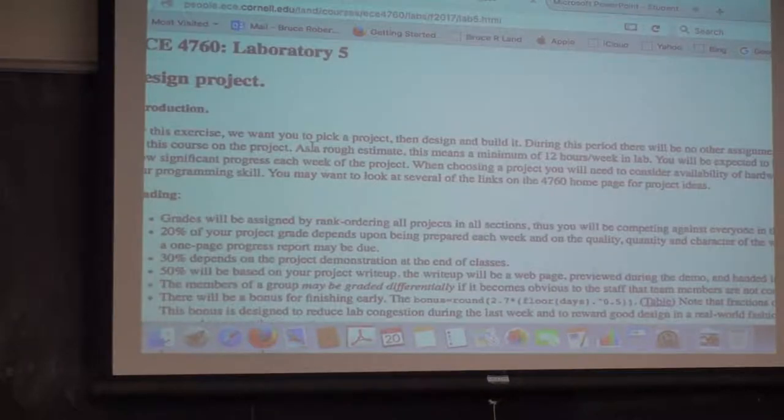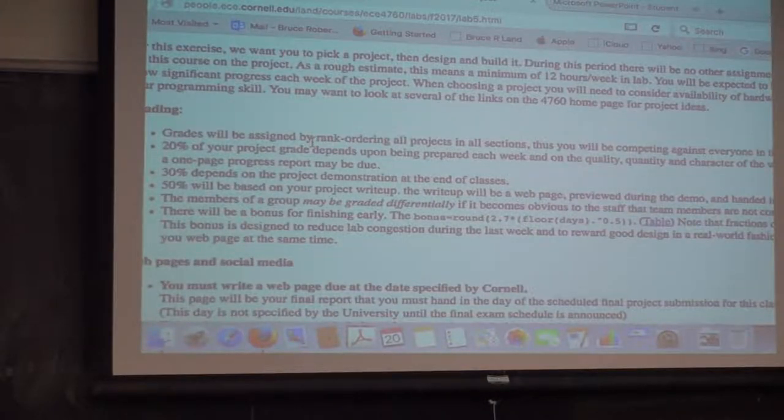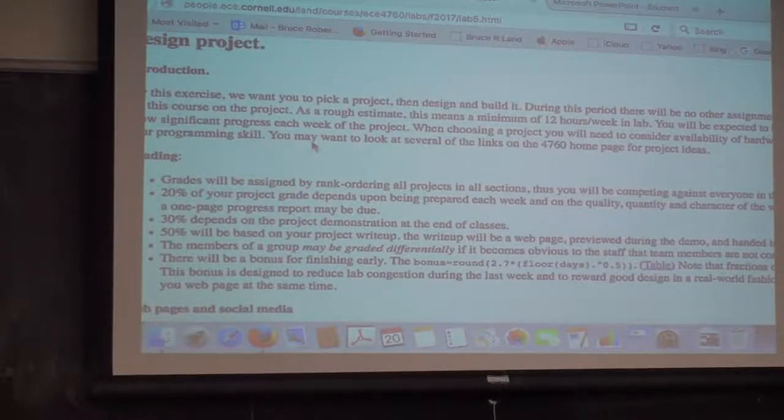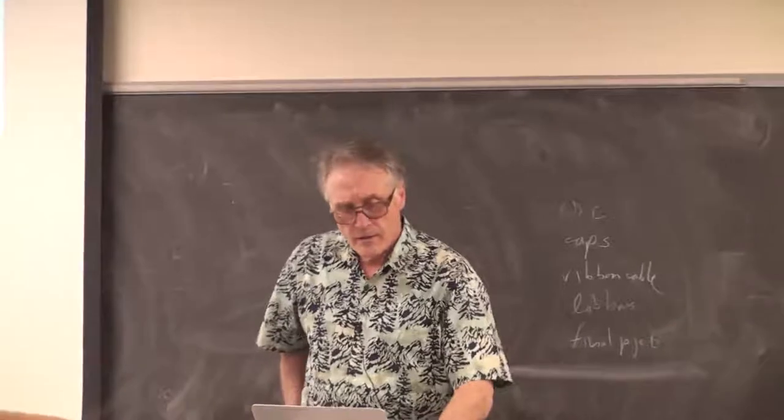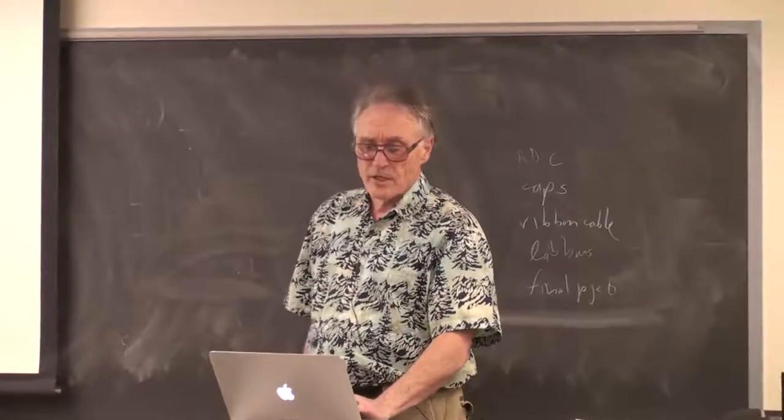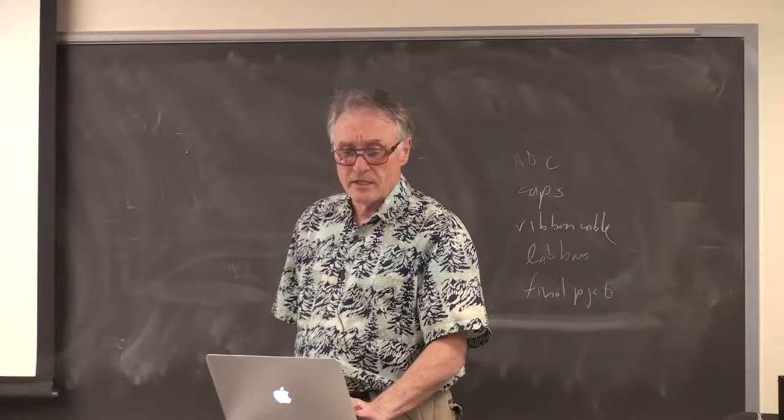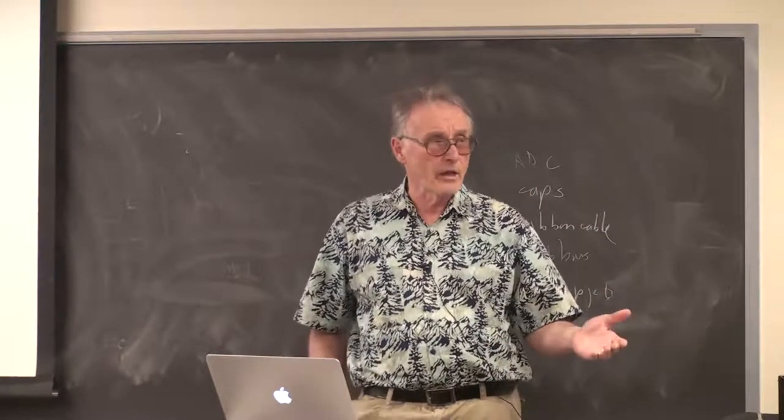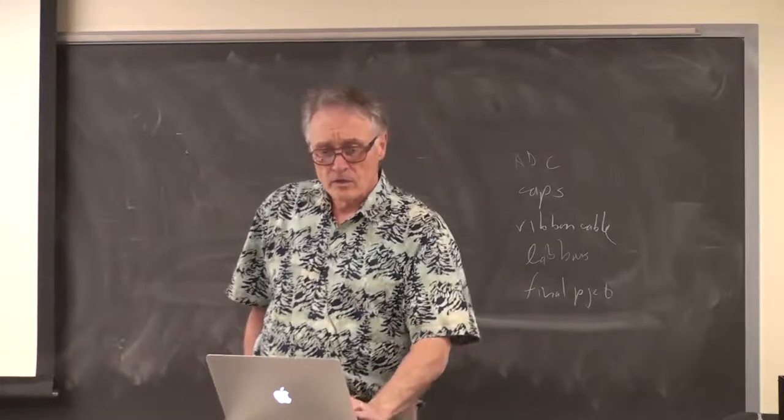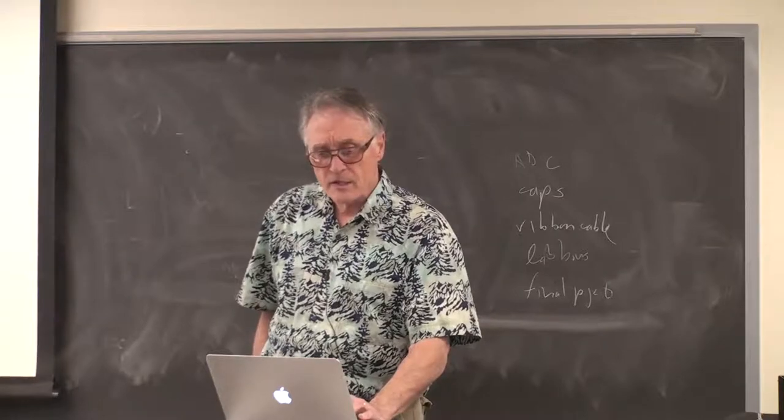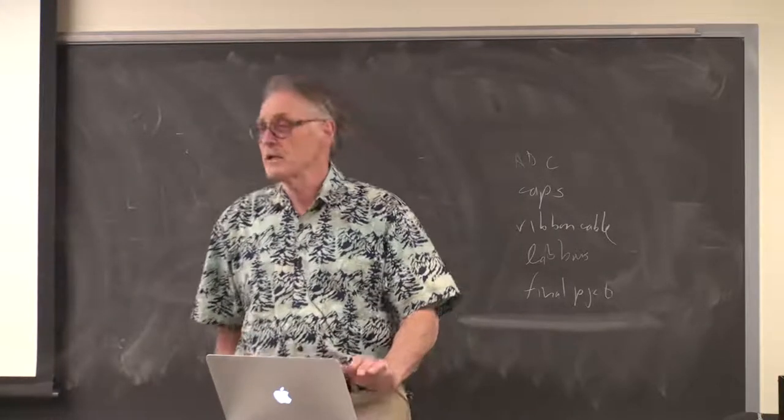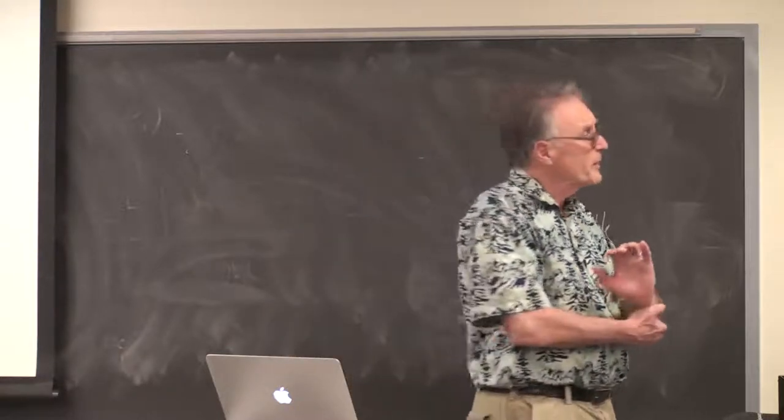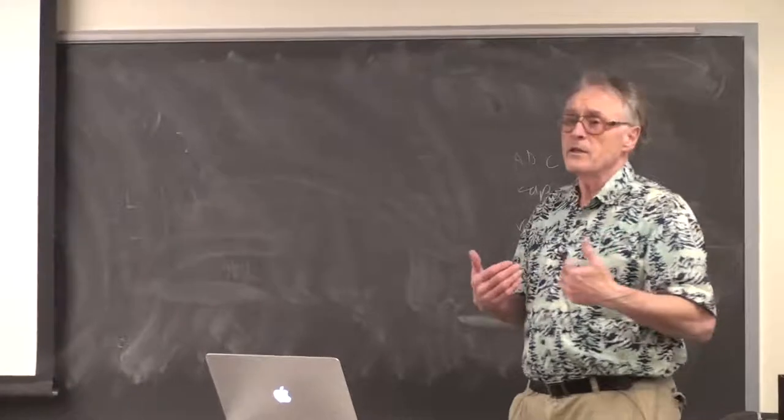What else? So you should probably read lab 5 fairly soon, like this weekend in your spare time. We're going to rank order the projects and then assign grades based on the rank order. And about 30% depends on the project grade at the end of class. 20% is did you work every week? Did you show progress every week? If your progress reports are 'we did nothing,' you're going to lose progress points. So 20% is depends on being prepared and progress. 30% on how well it worked, and 50% as usual on the write-up. And groups, members of a group can be graded differentially if we detect that somebody is not doing anything.